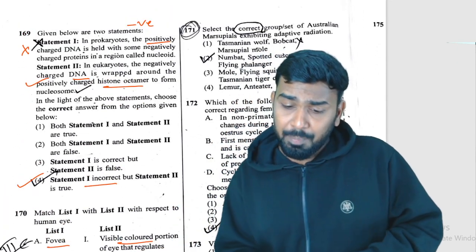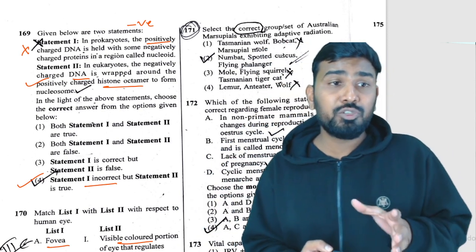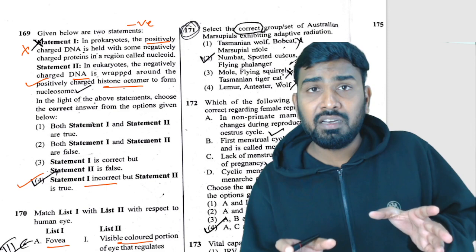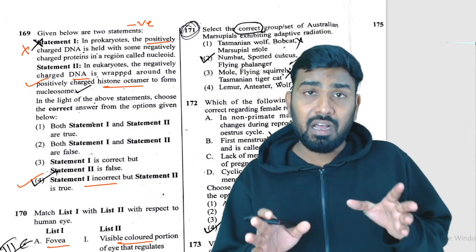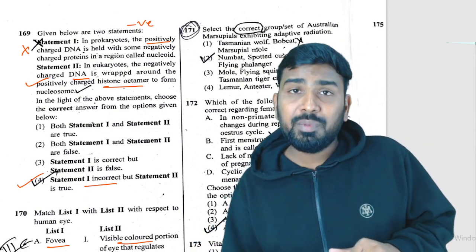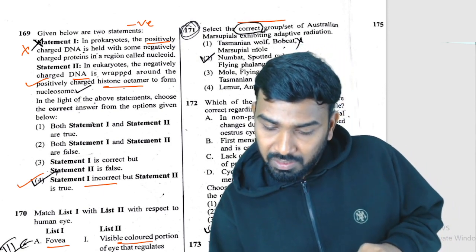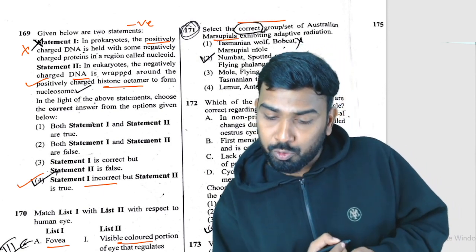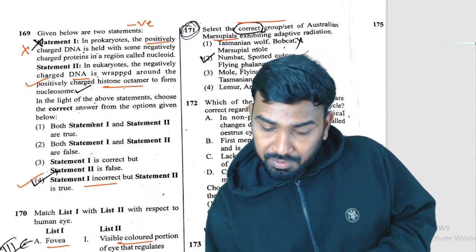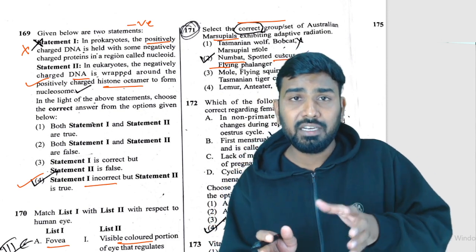Question 171 is from the evolution chapter — adaptive radiation. A figure of Australian marsupials is given in NCERT. The correct group of Australian marsupials showing adaptive radiation includes numbat, spotted cuscus, and flying phalanger. This is a figure-based question directly from NCERT.